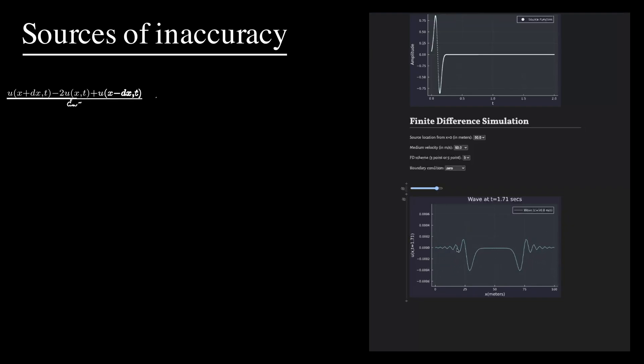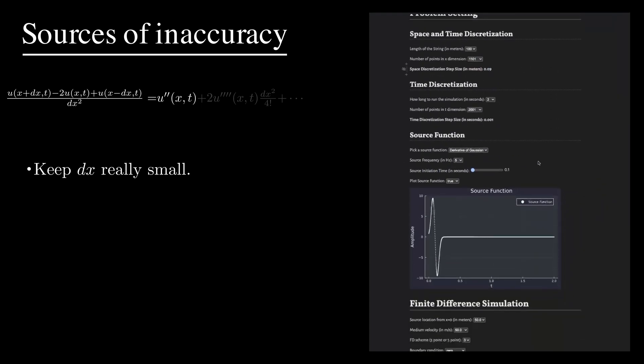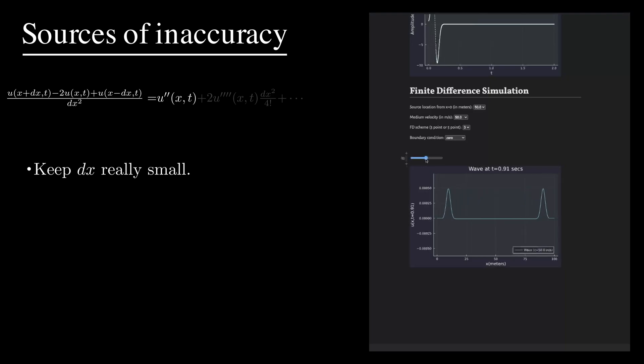In the finite difference approximation, to get more accurate results, I should keep dx really small. This is because it contributes significantly to the errors in the simulation. Even looking at this, you can see if I keep dx small, the terms after second derivative will vanish as they will have dx raised to the power of 4, 6, 8 and so on multiplied to the higher order derivatives. Let's decrease the step size to 0.09. Now the solution was quite accurate.